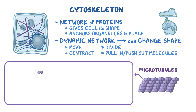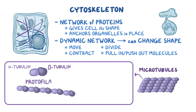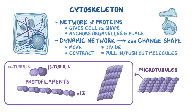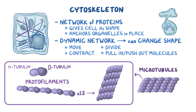Microtubules are made of alternating rounds of proteins called alpha and beta tubulins, which form long strands called protofilaments. Thirteen of these protofilaments come together to form a single microtubule.